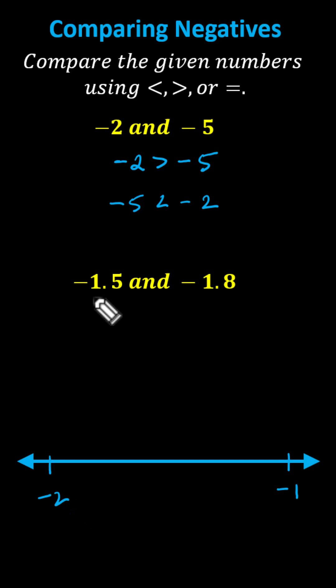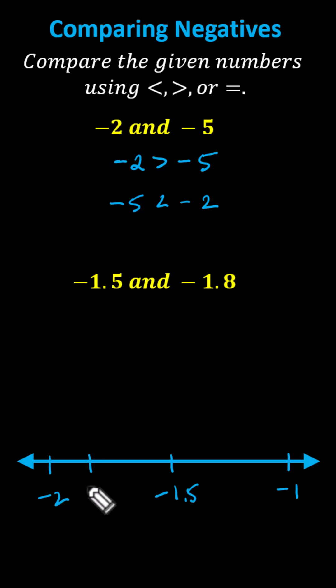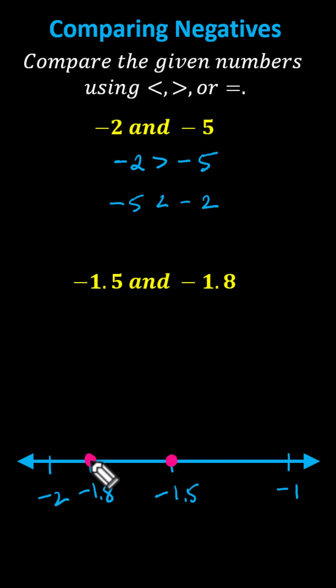Let's first plot negative 1 and 5 tenths, which is right in the middle between negative 1 and negative 2. And then negative 1.8, or negative 1 and 8 tenths, is going to be between negative 1.5 and negative 2, a little bit closer to negative 2. Now we'll plot the two values: negative 1.5 and negative 1.8. Because negative 1.5 is to the right of negative 1.8, we can say negative 1.5 is greater than negative 1.8.